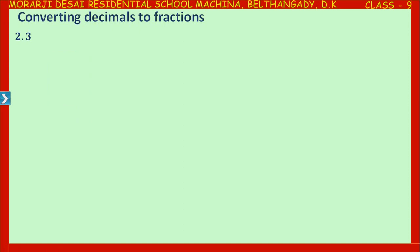Look at the first example: 2.3. See the place values here. On the left side of the decimal point, we have 2. The place value of 2 is ones. The place value of 3 is tenths.